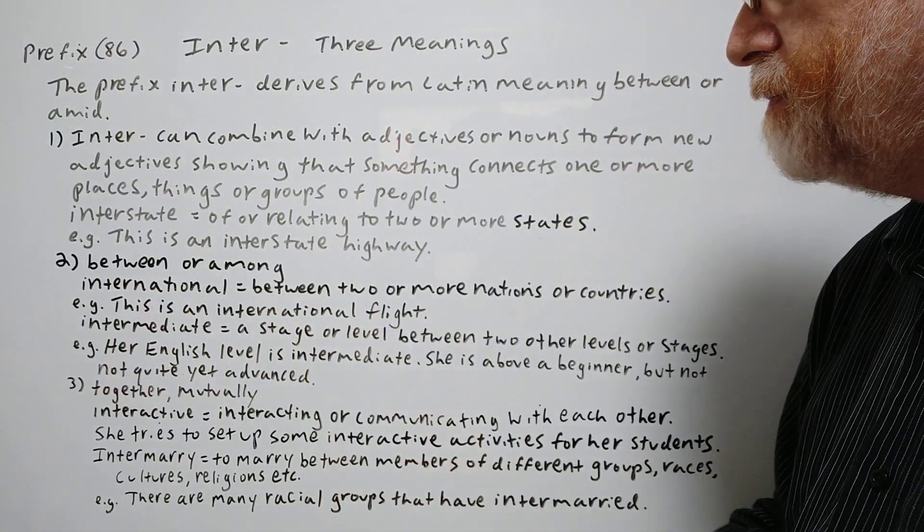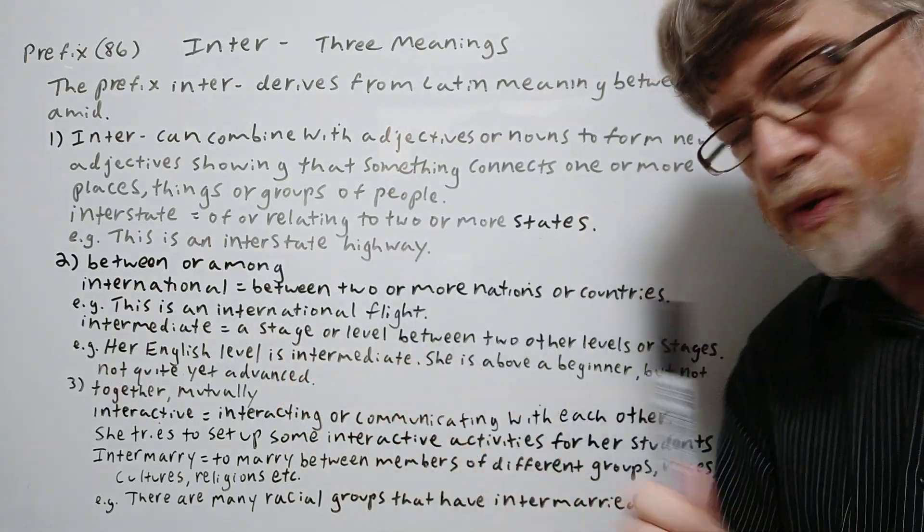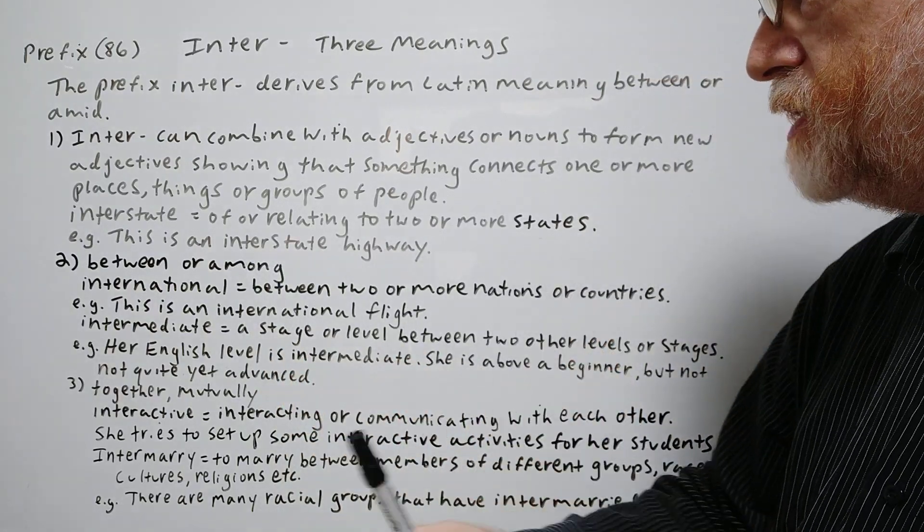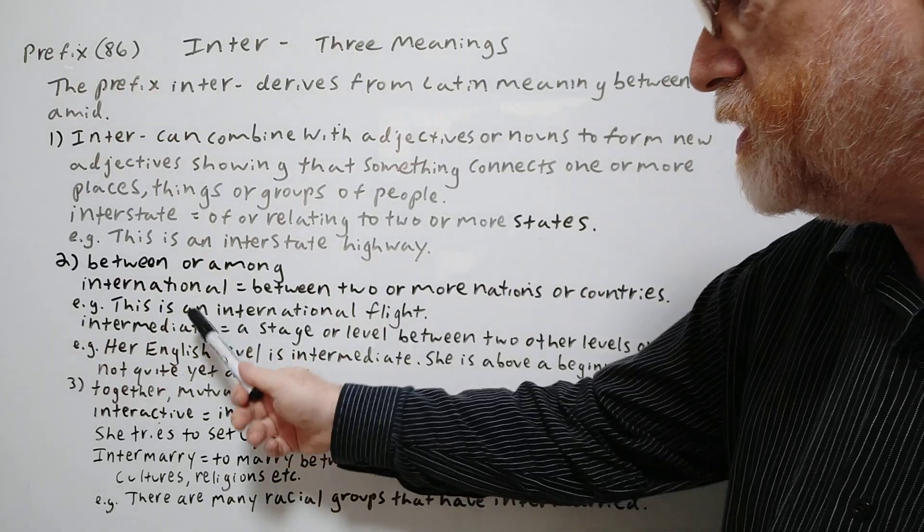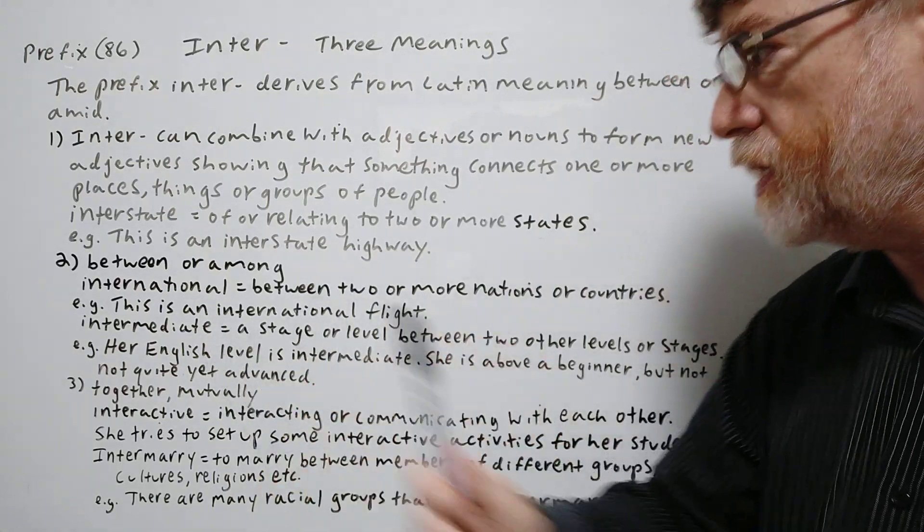Number two, between or among. International, between two or more nations or countries. This is an international flight, of course, flying from one country to another.